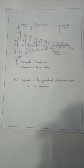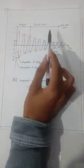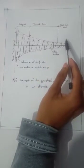The AC component of the symmetrical short circuit current is shown in the figure in which the Subtransient period, transient period and steady state period are shown.